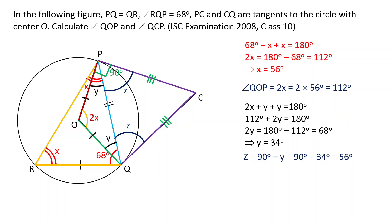Now z is known. So we can find out the third angle QCP by sum of three angles equal to 180 degrees. This will give the unknown angle QCP as 68 degrees.